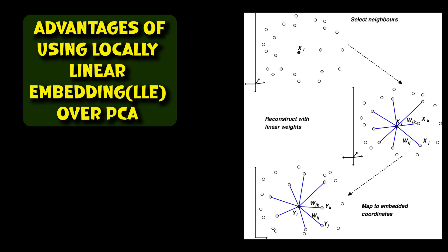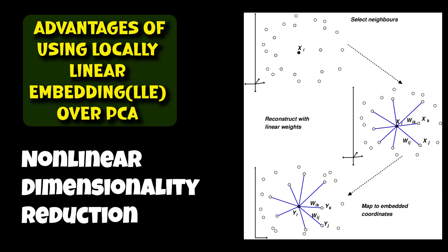The first point is about non-linear dimensionality reduction. LLE is a non-linear dimensionality reduction technique while PCA is linear. This means that LLE can effectively capture the manifold structure of data that lies on a non-linear surface, whereas PCA is limited to identifying the directions of maximum variance in the data.